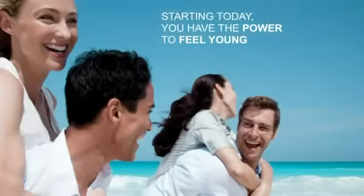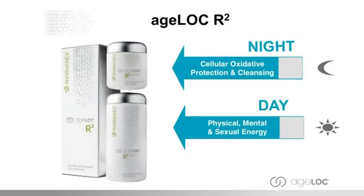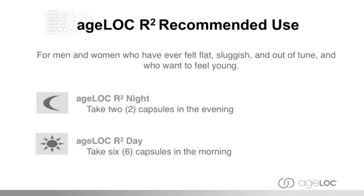The science in a nutshell is identifying, targeting, and reactivating the youth gene clusters related to cellular energy production and cellular oxidative protection and cleansing. Starting today, you have the power to feel young. Age Lock R² Day targets physical, mental, and sexual energy, and R² Night targets cellular oxidative protection and cleansing. R² Day is taken in the morning — six capsules — for anyone who has felt flat or sluggish, and R² Night is two capsules in the evening, when most cellular cleansing takes place.